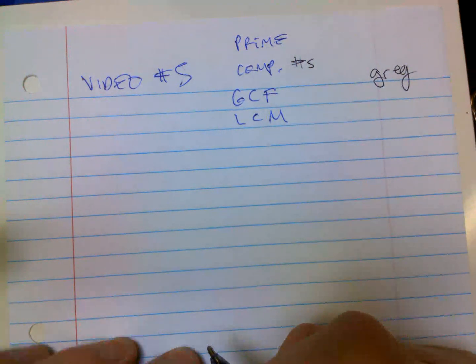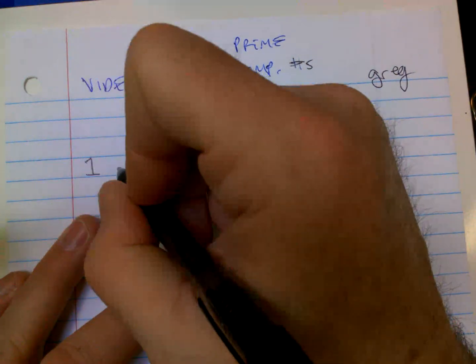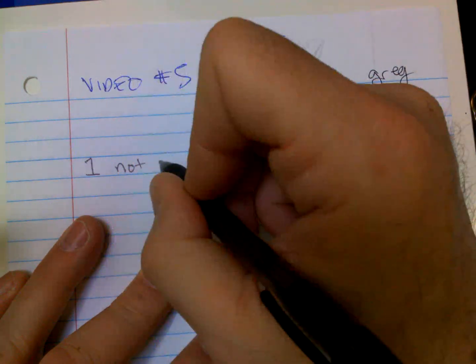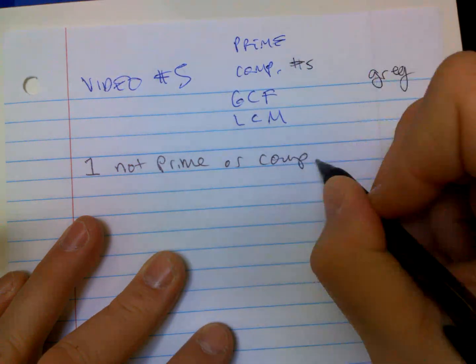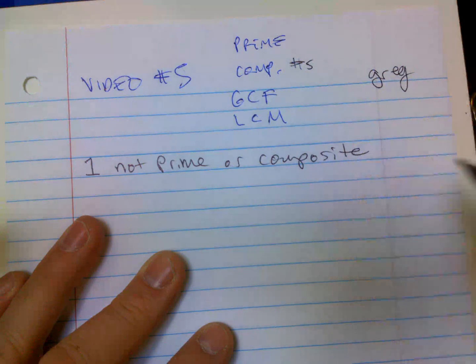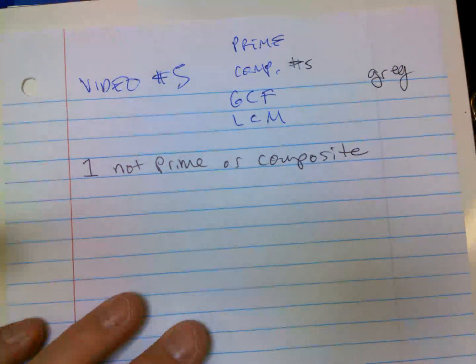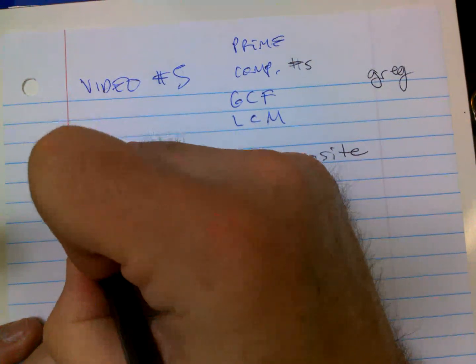All right, prime numbers. First of all, the biggest trick is one is not prime or composite - special situation, it's neither. A prime number is numbers you cannot, kind of like primary colors, you can't break them down any further.